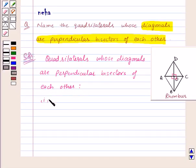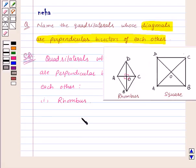So the first one is rhombus. Now consider a square. We know that a square is a quadrilateral which satisfies all the properties of a parallelogram as well as of a rhombus.